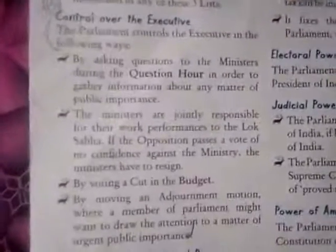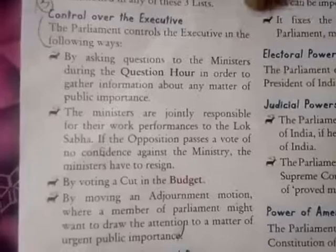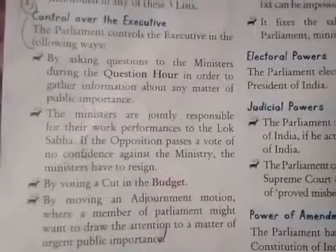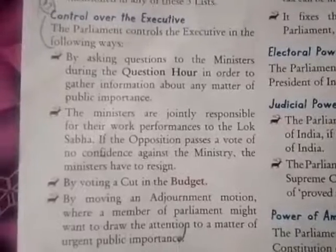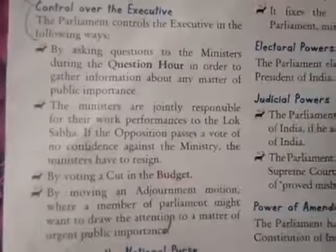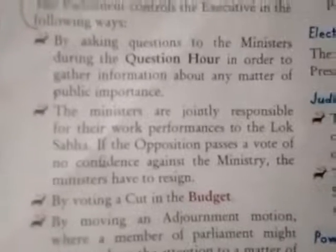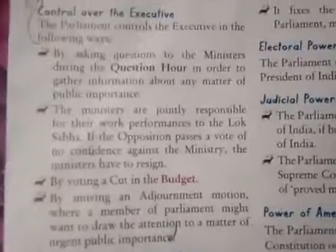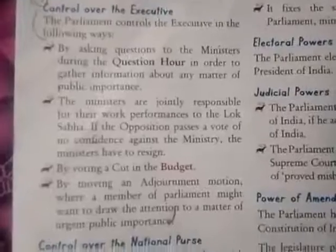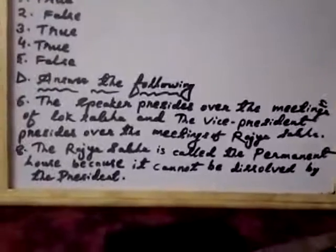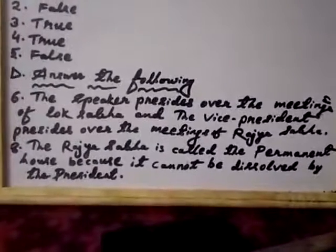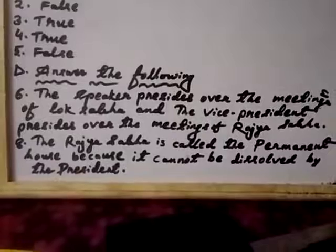Number five answer — how does the parliament exercise control over the executive? Open page number 136. Who presides over the meetings of the houses of the parliament? The speaker presides over the meetings of the Lok Sabha and the vice president presides over the meetings of the Rajya Sabha.